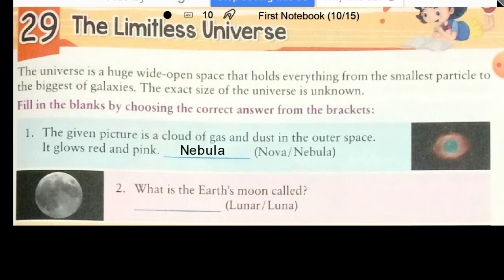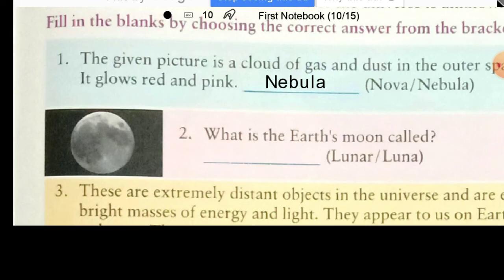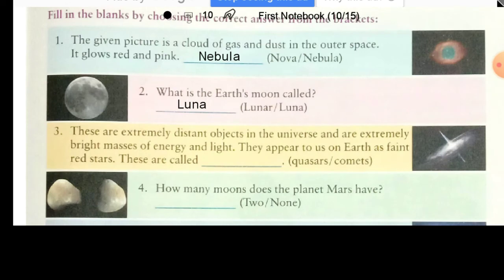Question 2: What is the Earth's moon called? Yes — it is called Luna. It is an Italian word. Question 3: These are extremely distant objects in the universe, extremely bright masses of energy and light. They appear to us on Earth as faint red stars. These are called quasars.